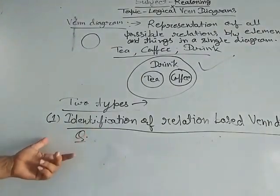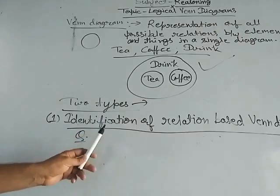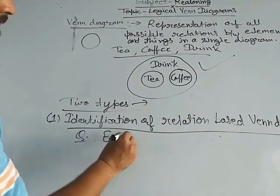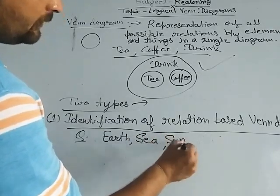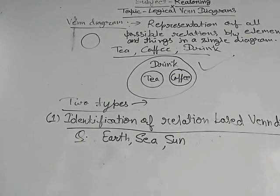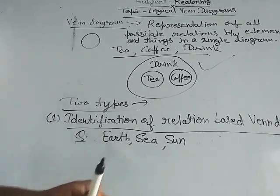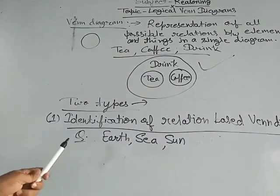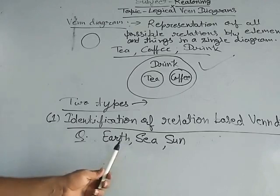The questions based on it are like: Identify the diagram that best represents the relationship among the classes given below. And the classes are earth, sea and sun. Now you have to identify the diagram for these three elements. The diagrams are given to you in options and you have to choose the correct diagram for it.